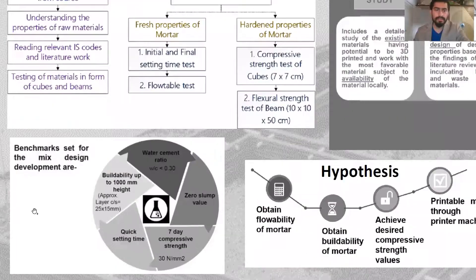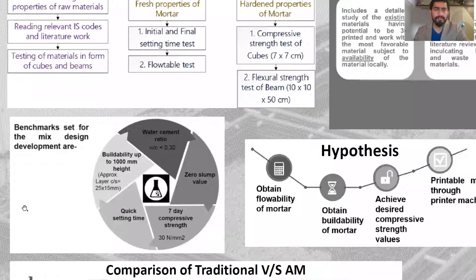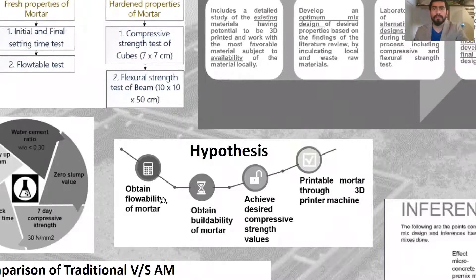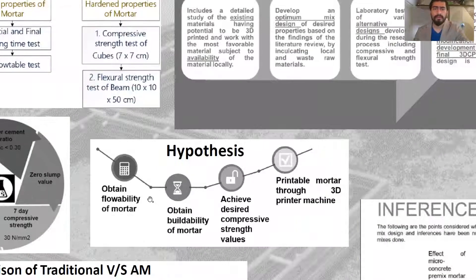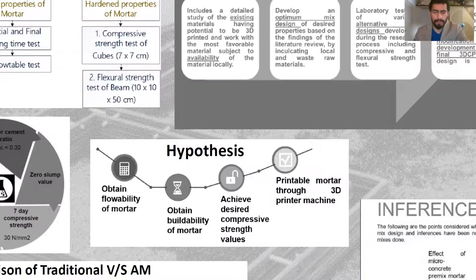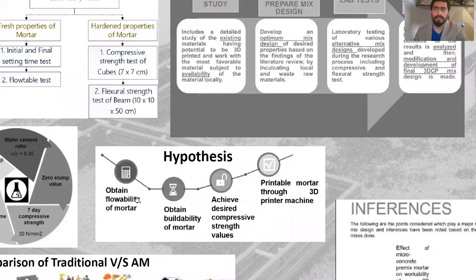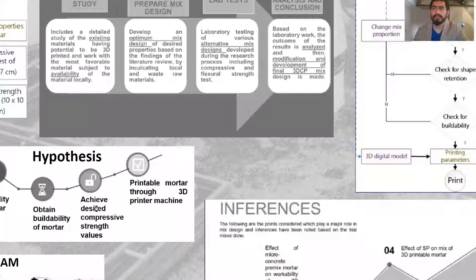There are several benchmarks associated with this research program, including slump, compressive strain, quick setting time, limited workability, and water-cement ratio. My hypothesis is based on four steps: first, get proper fluidity of the concrete material; then move onto the buildability property; achieve a compressive strength value; and then print the material with a 3D printer system.